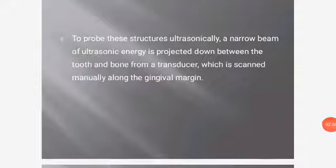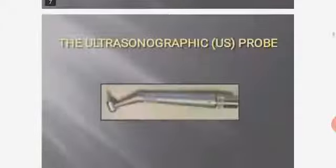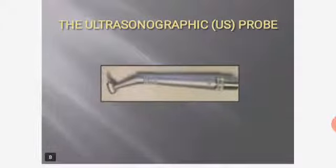To probe these structures ultrasonically, a narrow beam of ultrasonic energy is projected down between the tooth and bone from a transducer, which is scanned manually along the gingival margin. This is the ultrasonographic probe.